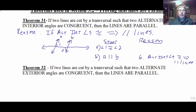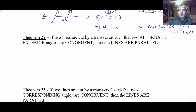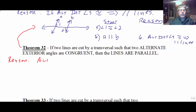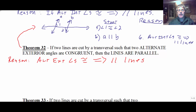If two lines are cut by a transversal such that the alternate exterior angles are congruent, then the lines are parallel. Our reason in proof: alternate exterior angles congruent implies parallel lines. Make sure you have the congruent part — alternate exterior angles alone don't imply parallel lines, but alternate exterior angles congruent implies parallel lines.